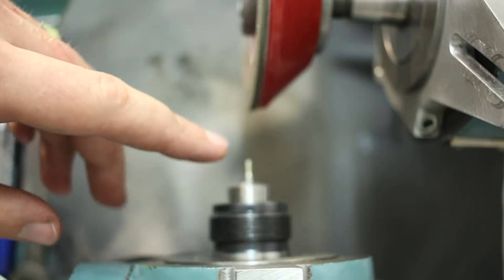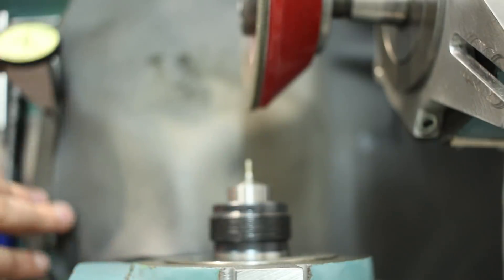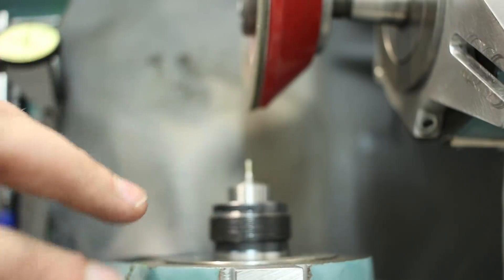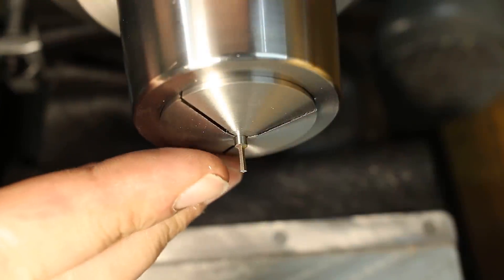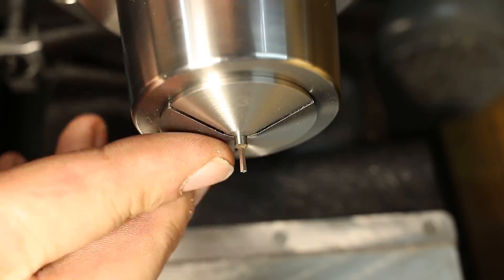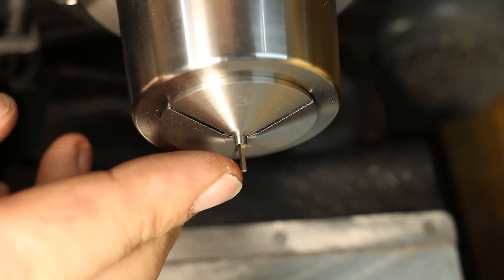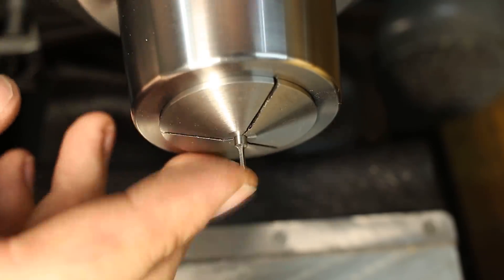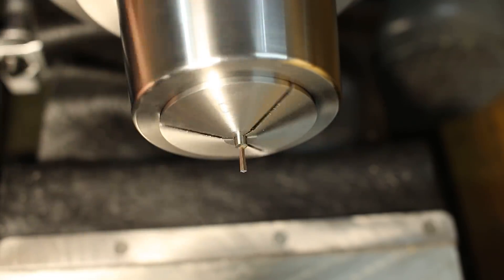I could do this without a problem on the Deckel grinder but I want to get some confidence in using this machine. I added just a little bit of a hollow grind on the front cutting edge to give it a kind of positive cutting action. This should reduce cutting forces a little bit.